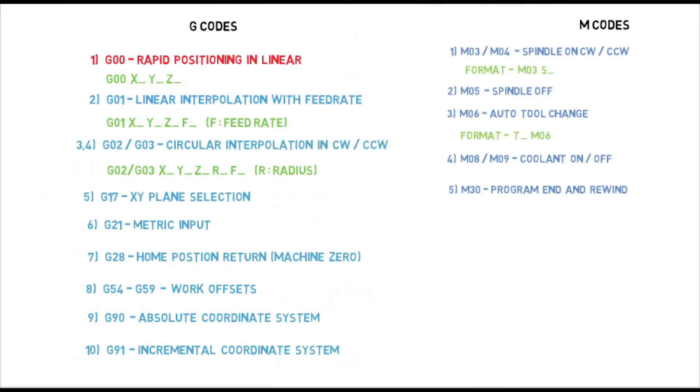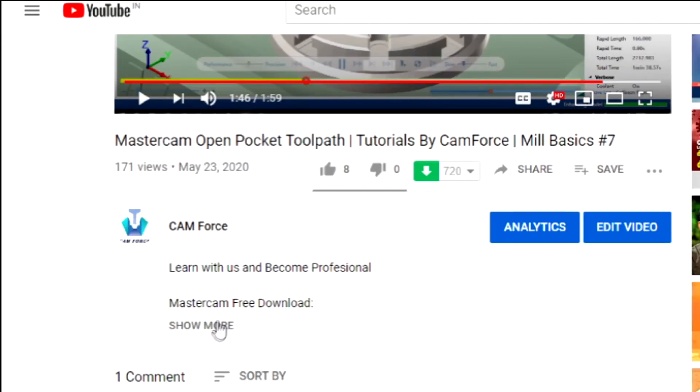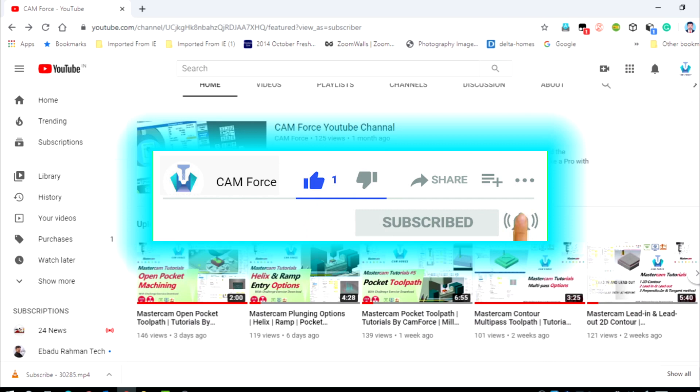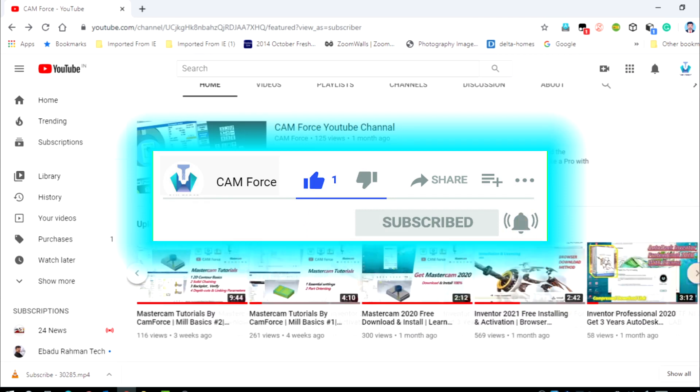These are the 15 G and M codes you must know for creating a basic CNC program. Some more codes will be explained during application in coming tutorials. The PDF note is available in the description. For more CAD, CAM, CNC tutorials, subscribe to CAM Force. Happy learning!